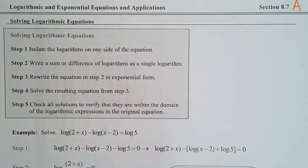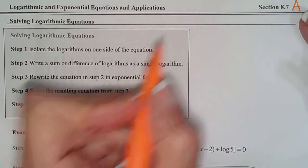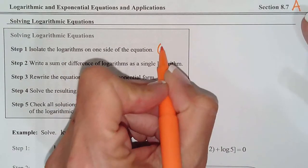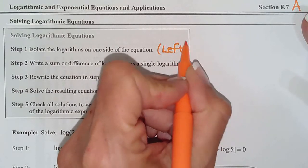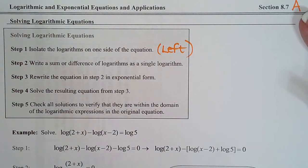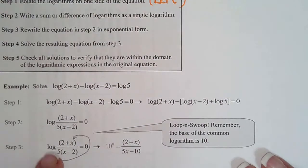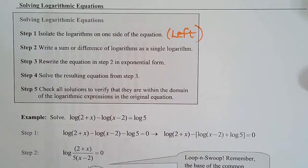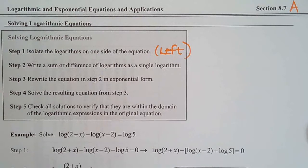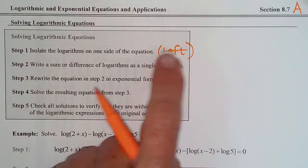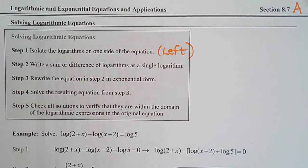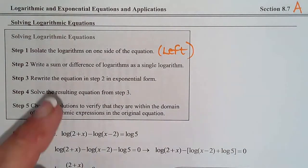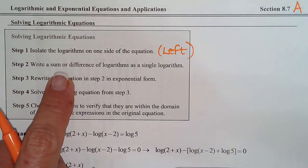Here are the steps for solving log equations. First, we move all the logs to one side — I would put them on the left, because back in section 8.4 when we did loop and swoop, we always wanted the log on the left so we could do loop and swoop. So move all your logarithms to the left side of the equation. Then you write a single log.